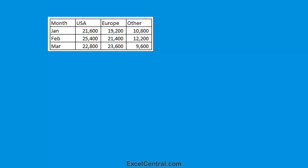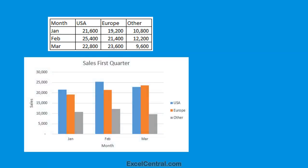Here's a chart I've created from this raw data. And you can see at once from the chart that sales in Europe have slowly been increasing in the first quarter, while sales in the USA increased in February but decreased in March.